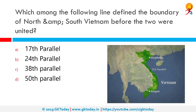Which among the following line defined the boundary of north and south Vietnam before the two were united? The correct answer is the 17th parallel. The 17th parallel north is a circle of latitude that is 17 degrees north of the earth's equatorial plane. It crosses Africa, Asia, the Indian Ocean and the Pacific Ocean, Central America, the Caribbean and the Atlantic Ocean. The parallel is particularly significant in the history of Vietnam.